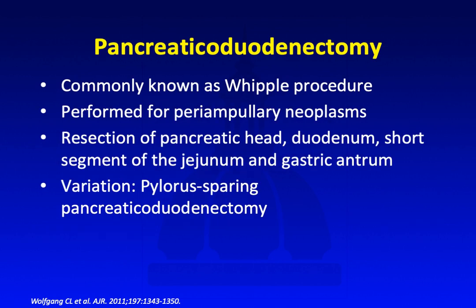The pancreatic duodenectomy, more commonly known as the Whipple procedure, is performed for periampullary neoplasms. It involves resection of the pancreatic head, duodenum, a short segment of the jejunum, and the gastric antrum. A pylorus-sparing variation keeps the pylorus and in theory reduces bile reflux, though this hasn't really been borne out in practice. Whether the surgeon chooses the classic or pylorus-sparing Whipple depends on local institution and surgeon preference.